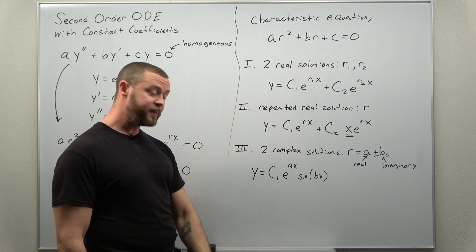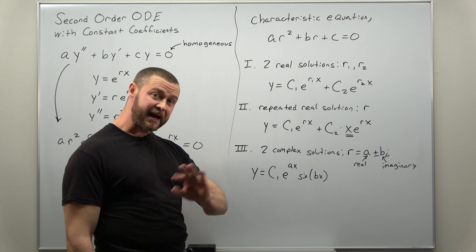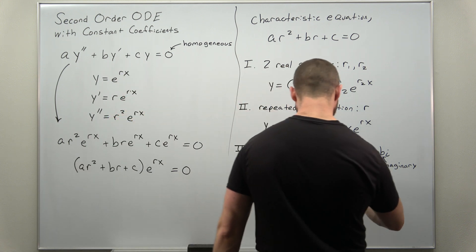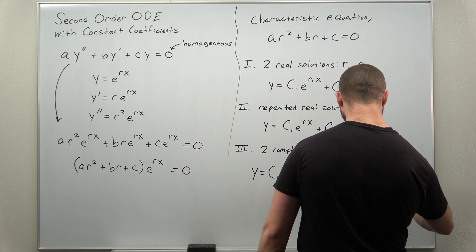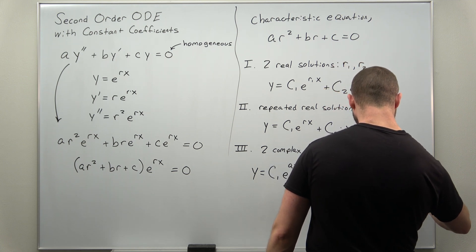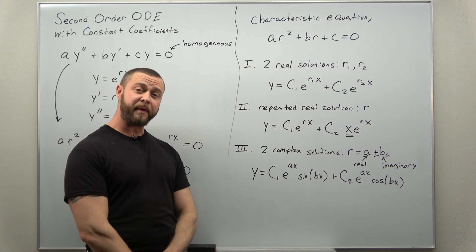The second linearly independent solution is very similar but with instead of sine of bx, cosine of bx. And that is our third and final possibility.